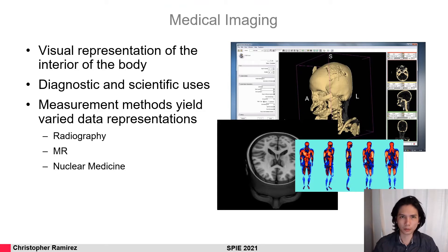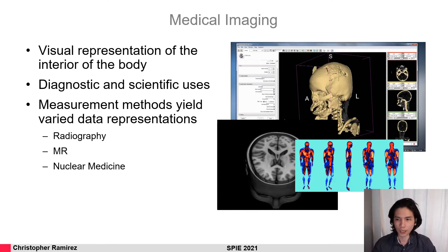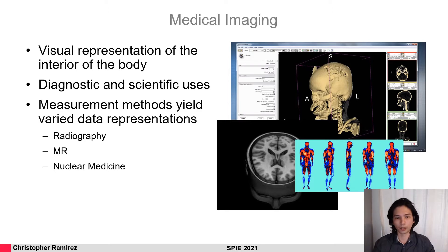To define the requirements, we need to take a look at the requirements in medical imaging. Medical imaging deals with the visual representation of the interior of the body, and depending on the context, it may have different requirements for the data. We have, for example, the diagnostic setting in which verifiability of the data and relational information is very important. We also have the academic setting in which more importance may lie on the resolution and qualitative information of the data. In the image we can see three different measurement methodologies: radiography, MR, and nuclear medicine.